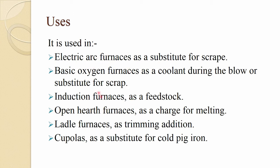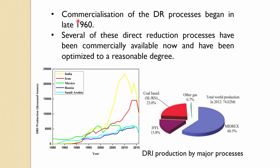There are many uses of direct reduced iron, and you can use it to make steel directly through this operation without needing liquid iron. However, economically it is not that useful. Commercialization of direct reduction processes began in the late 1960s. Several processes have been commercially available and optimized to a reasonable degree, so there is not much scope for improvement.